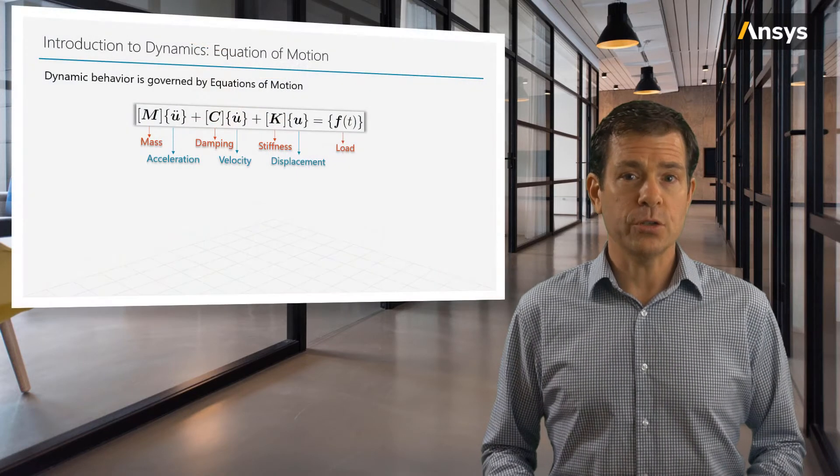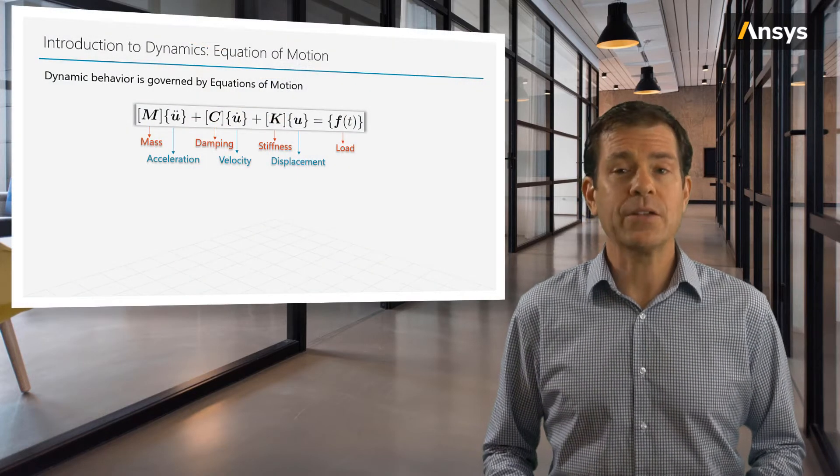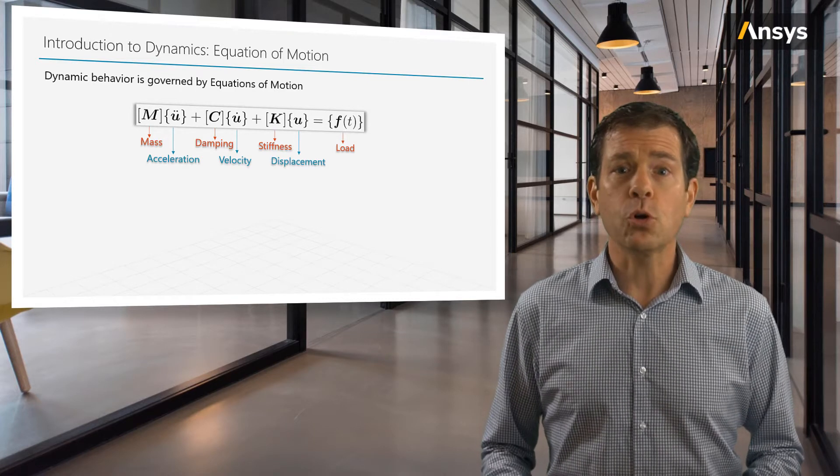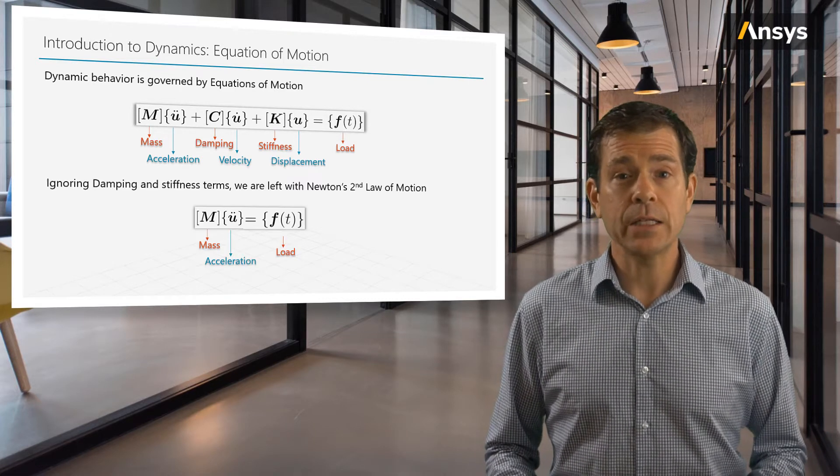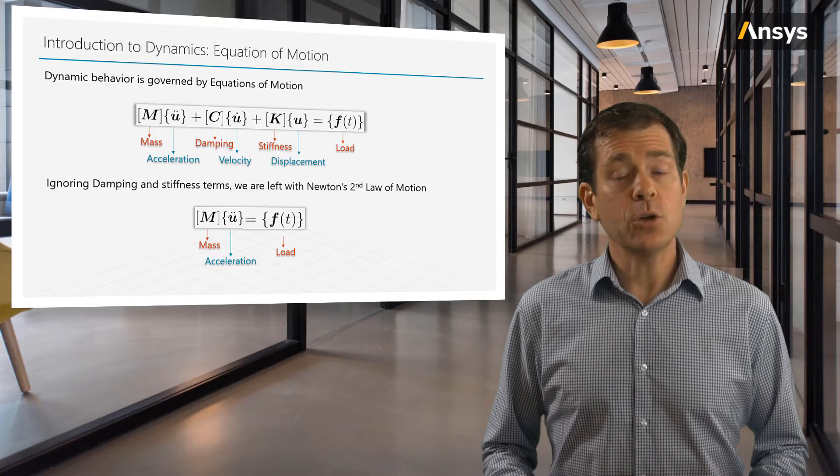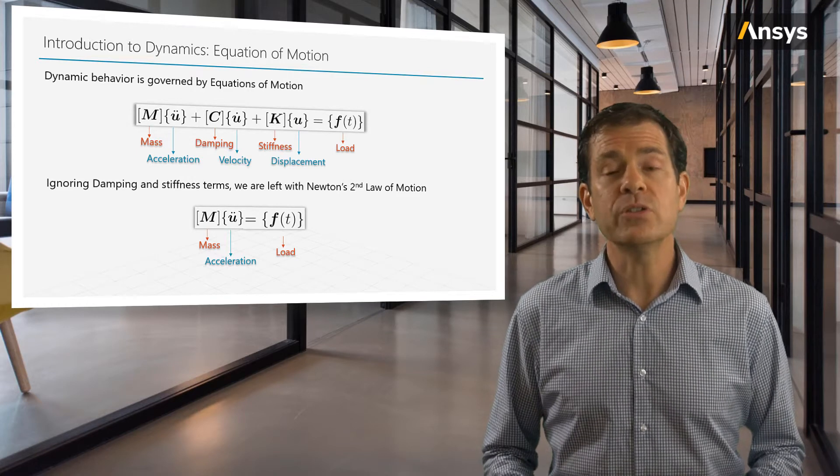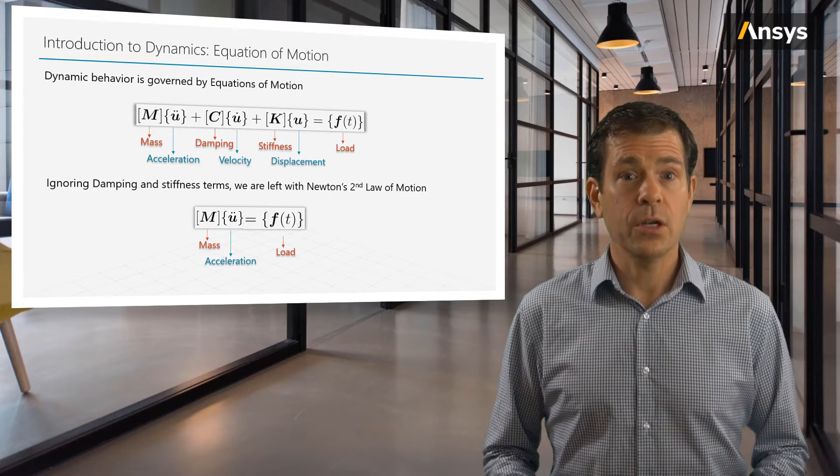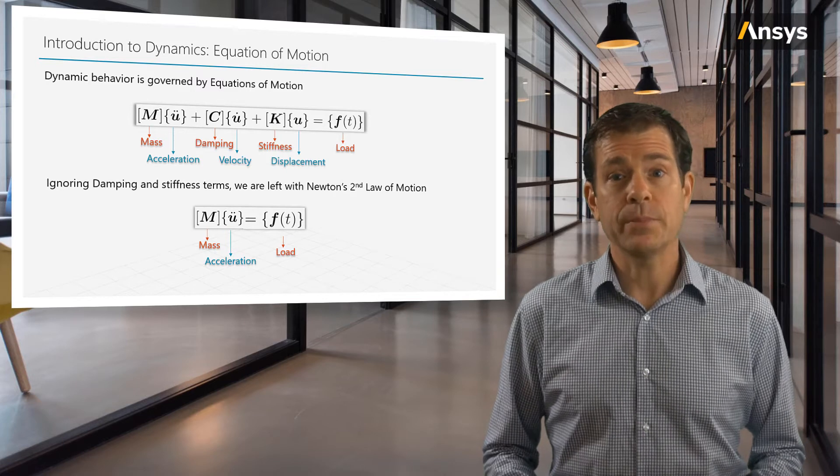Now from the equations of motion, we see that the first term has the mass matrix. If you ignore all other terms on the left-hand side of the equation, we can see the equation simplifies down to Newton's second law, which is force equals mass times acceleration. So this mass matrix will include all aspects of the mass and mass distribution of our object.